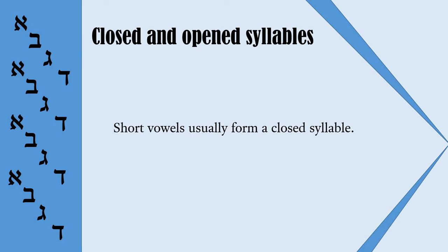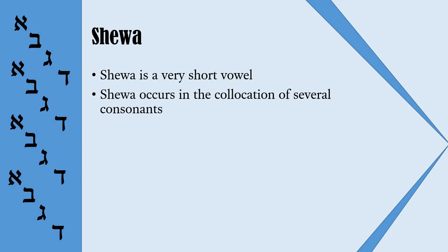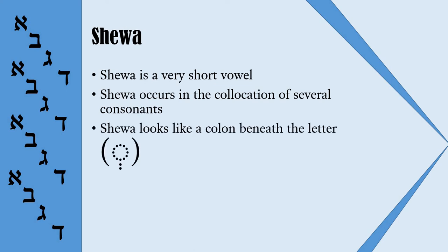This is important to remember when we need to understand the Sheva. So what is Sheva? Sheva is a very short vowel — it is so short that it does not even have a particular sound. The sound of Sheva can be described as a very short vowel between E and E. Sheva occurs in the collocation of several consonants. In Hebrew, this very short vowel is called Sheva and it looks like a colon, and it is always written beneath the letter.